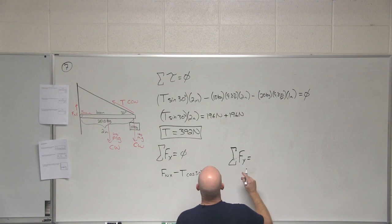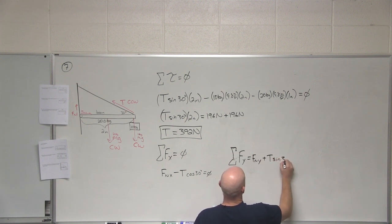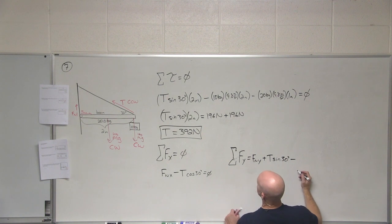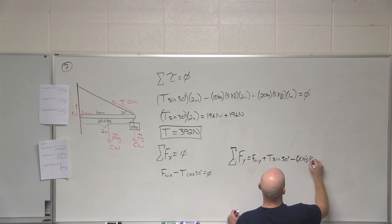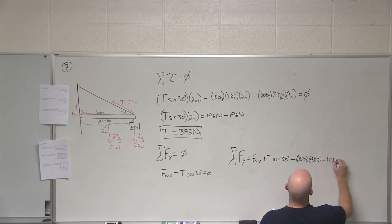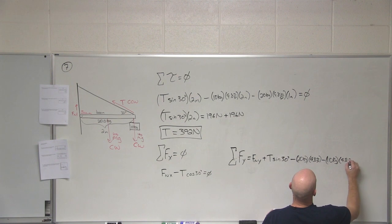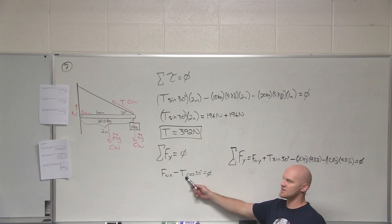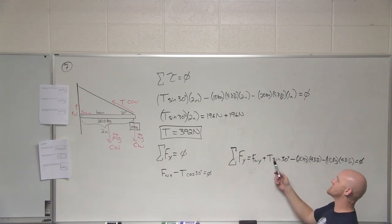I know the sum of the forces should equal zero. And then sum of the forces in the y direction, what forces we got pointing up? N y plus T sine 30 minus 20 times 9.8 minus 10 times 9.8 equals zero. Since we already solved for the tension, we could use this equation to get the normal force in the x direction and we could use this one to get the normal force in the y direction.